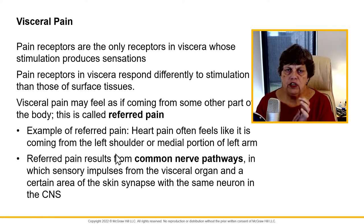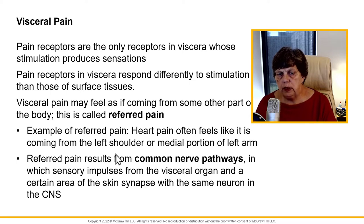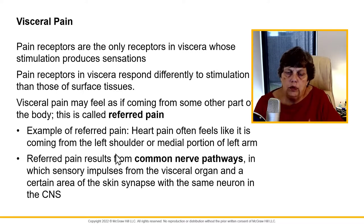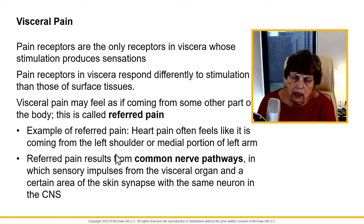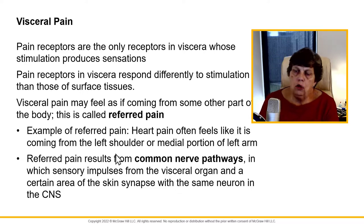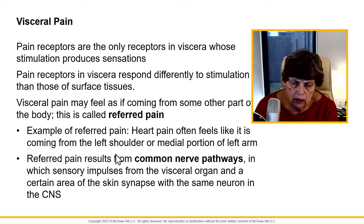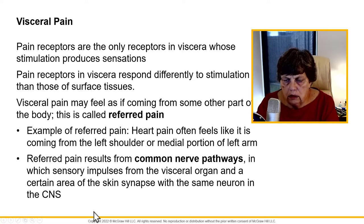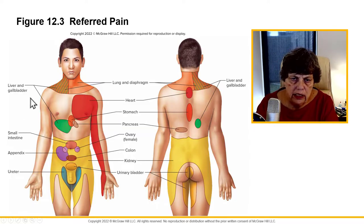Visceral pain comes from receptors in the viscera and they respond differently to stimuli compared to those on the surface. You may have what's called referred pain, where pain seems to be coming from somewhere else. For example, heart pain may be felt coming down the left shoulder and left arm; gallbladder problems can produce pain in the right shoulder. Referred pain results from these common nerve pathways — the liver, gallbladder area, the heart area.